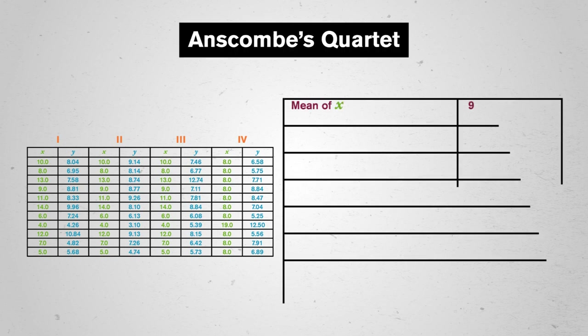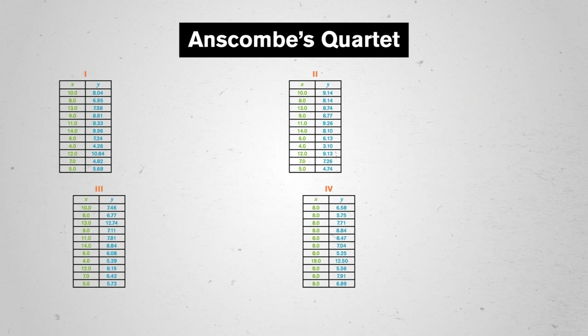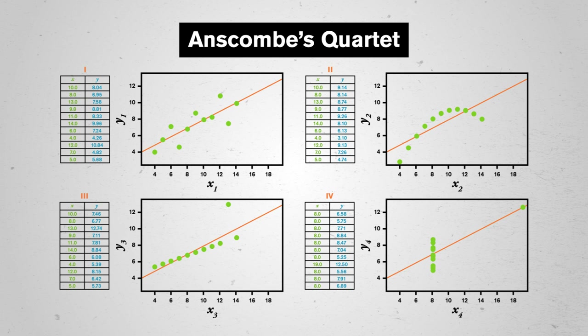These four are actually Anscombe's Quartet — special sets that almost have the same summary statistics or metrics like the range, frequency, or mean that help us summarize the data. With just the summaries and tables to work with, we'd probably think all four were saying the same thing. But watch what happens when we plot each set. These are four very different stories.